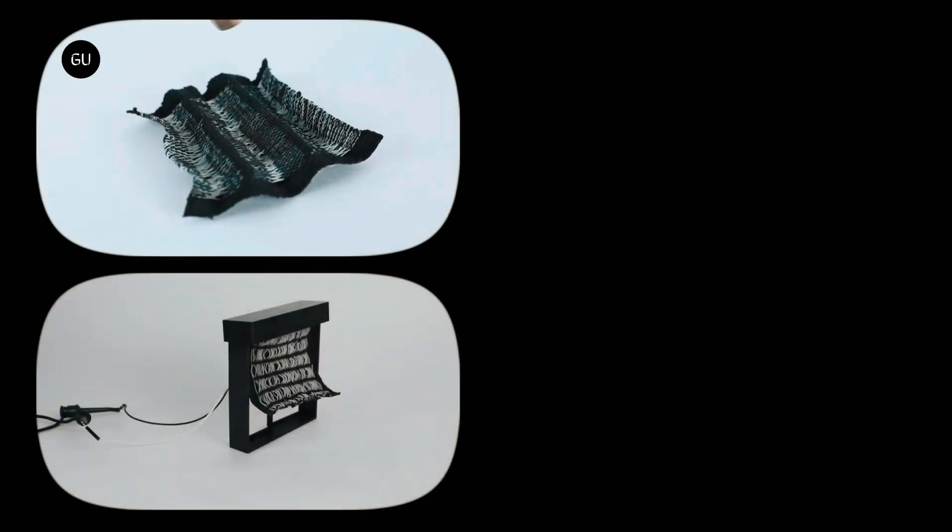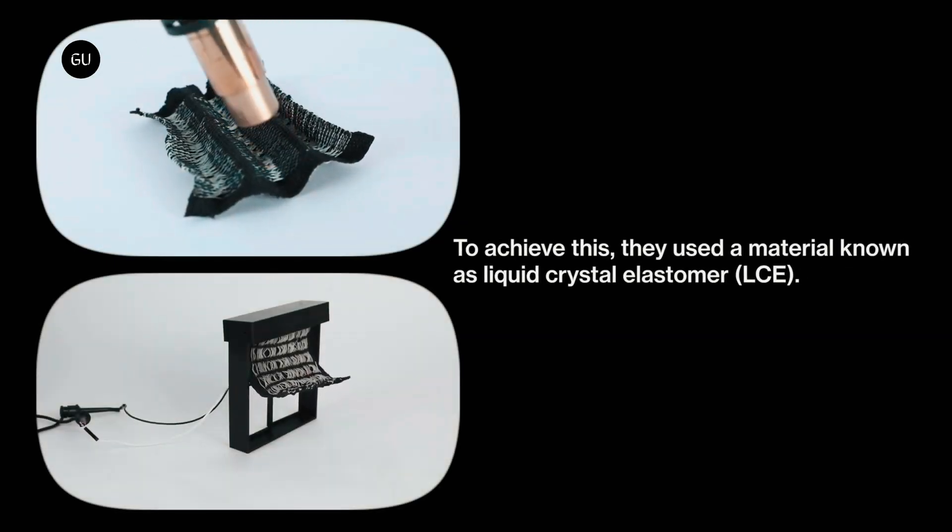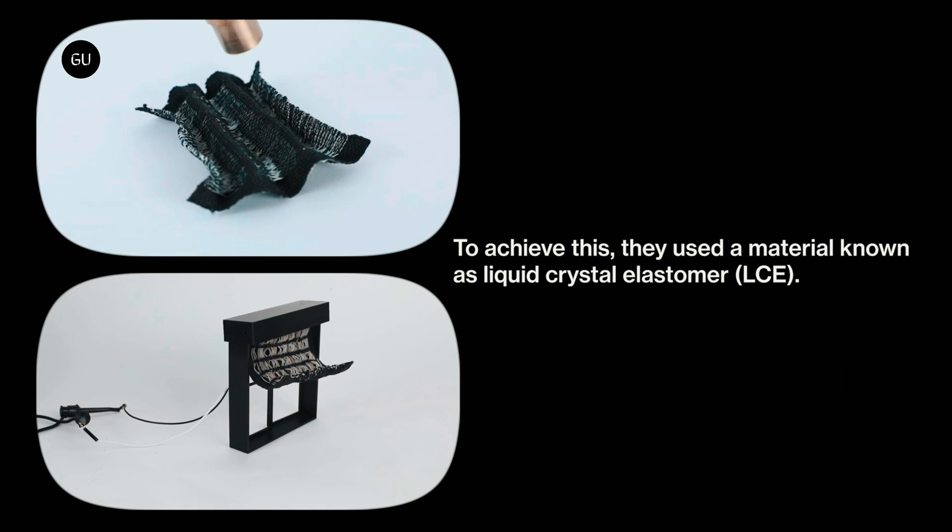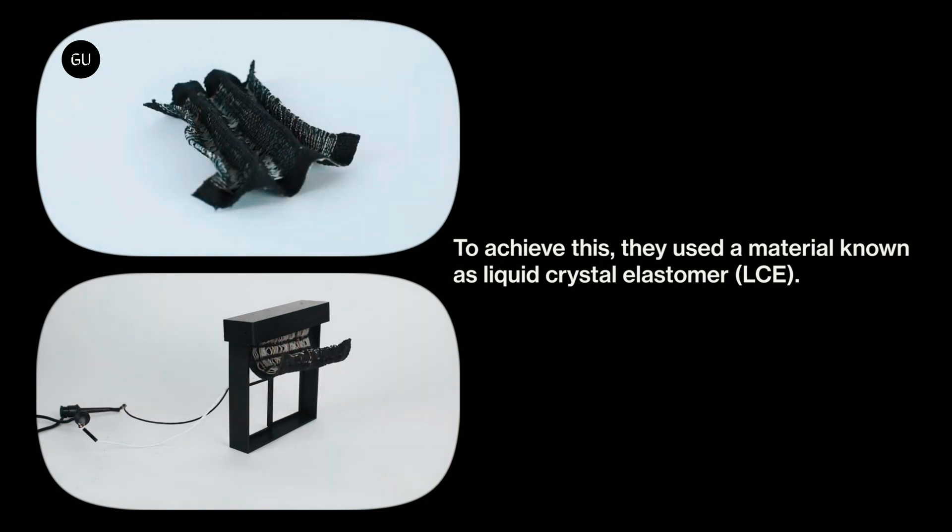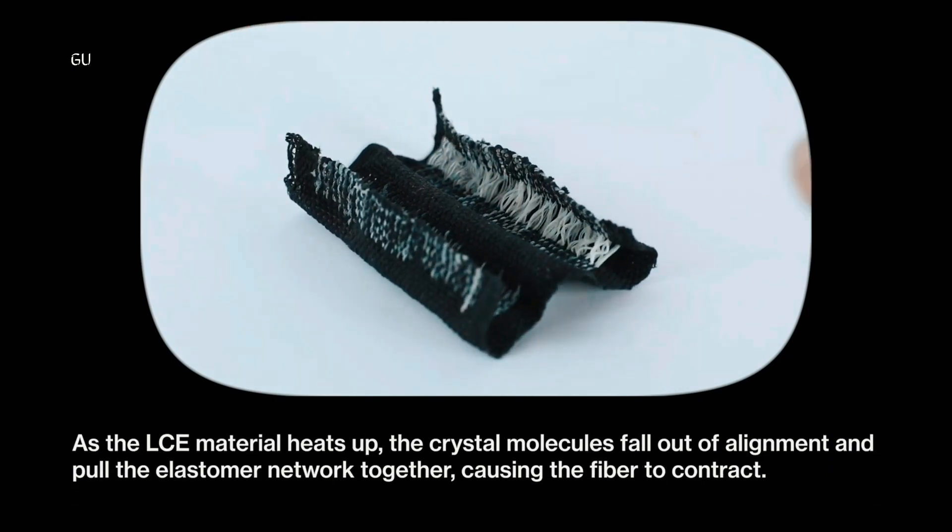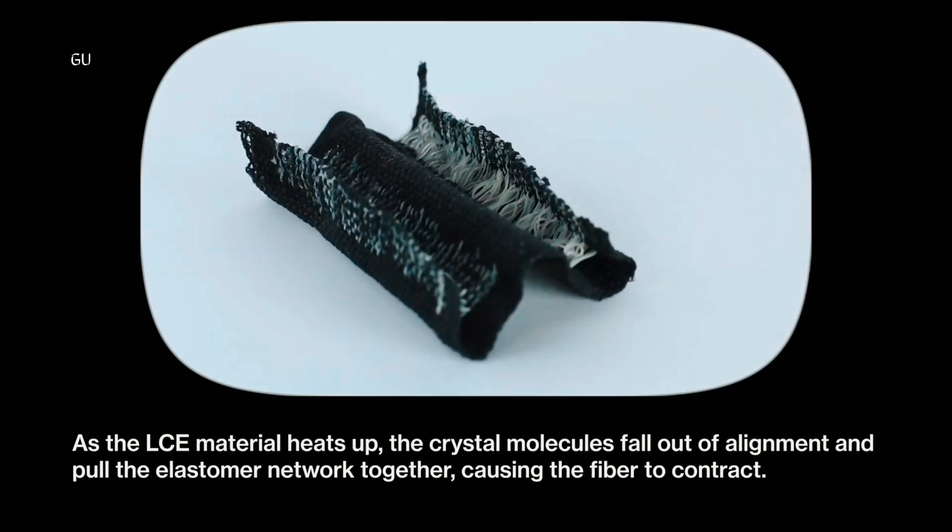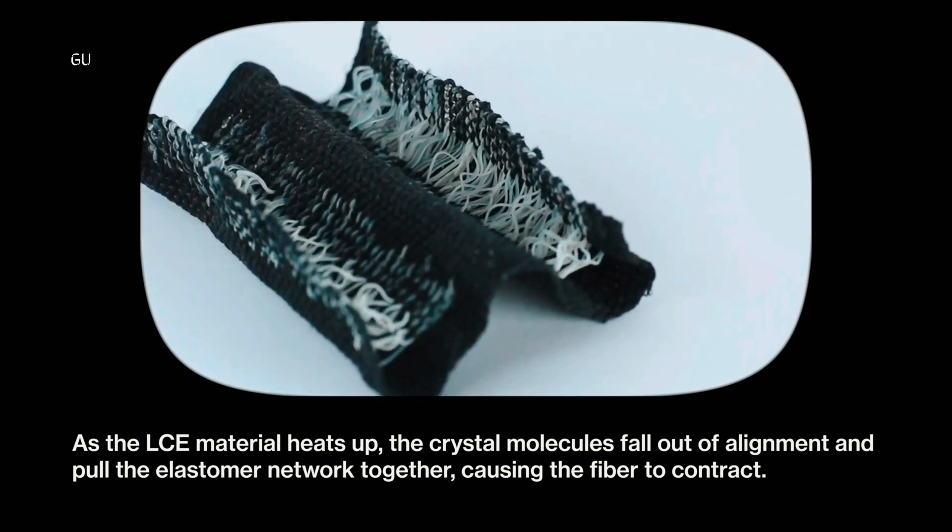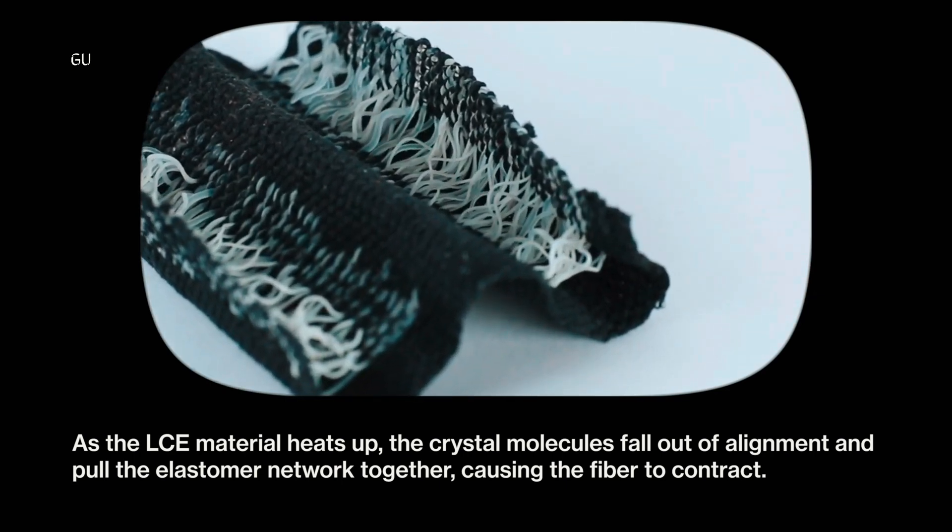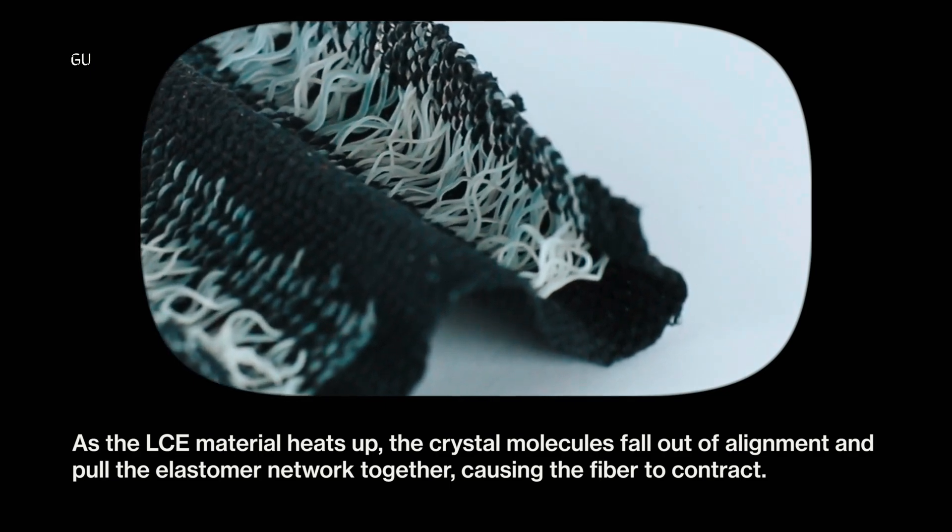A liquid crystal is a series of molecules that can flow like liquid but, when they're allowed to settle, stack into a crystal arrangement. They incorporated these crystal structures into a stretchy elastomer network. When heat is applied to the LCE, the crystals fall out of alignment and pull the elastomer together, causing the fiber to contract. When the heat is removed, the molecules revert to their original alignment.